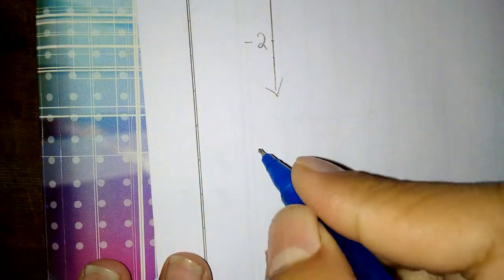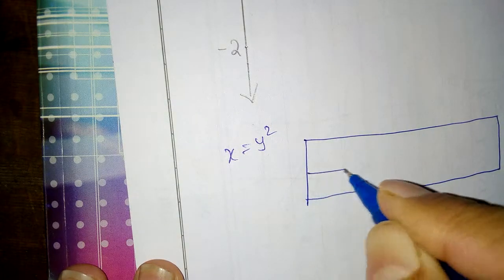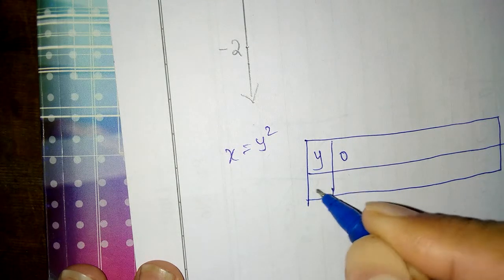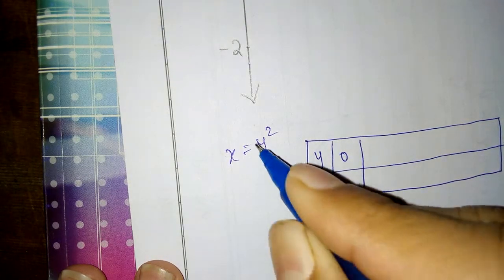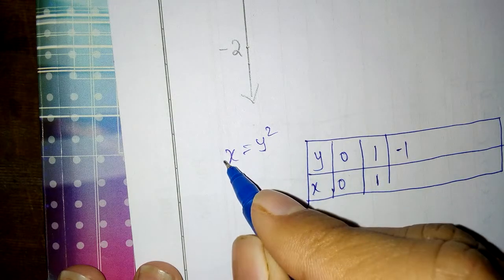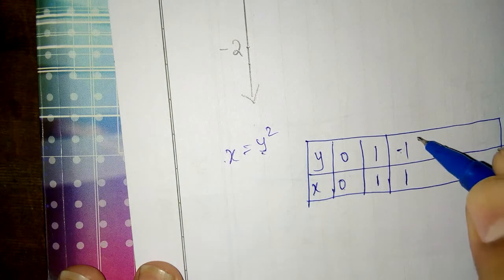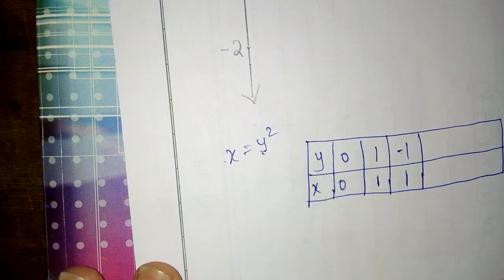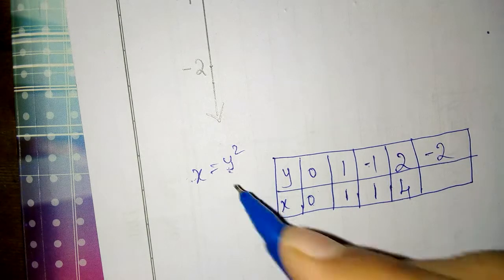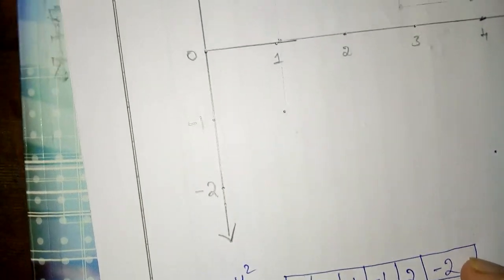For x is equal to y², if we put y equal to 0, then x is also equal to 0. If y is equal to 1, then x is equal to 1. If y is equal to minus 1, then x is equal to plus 1 because minus 1 squared is plus 1. If y is equal to 2, then x is equal to 4. If y is equal to minus 2, then minus 2 whole squared is plus 4, so x is equal to 4.